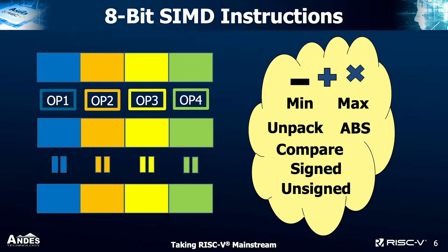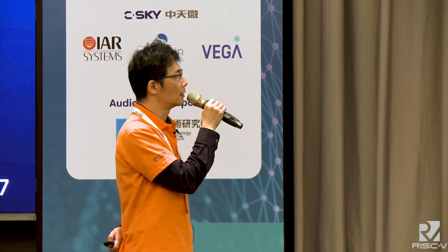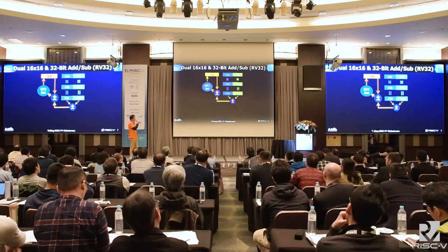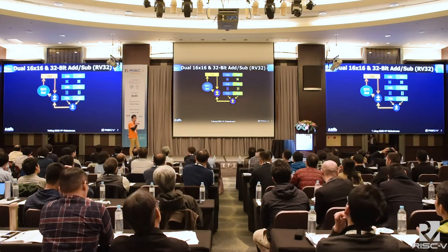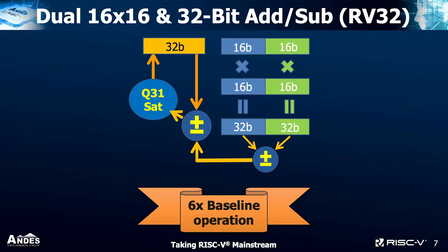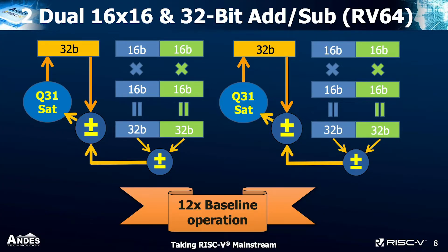Here I will show some of the more complicated instructions in the instruction set and their benefits. We have a 16-bit type reduction MAC operation that will complete two 16-bit multiplications and two additions or subtractions, and also perform Q31 value range saturation. There are a lot of operations involved in this single instruction. When compared with baseline operations using operation count, we get a six times benefit in RV32. In RV64, we duplicate the operation and now we have a 12 times benefit.